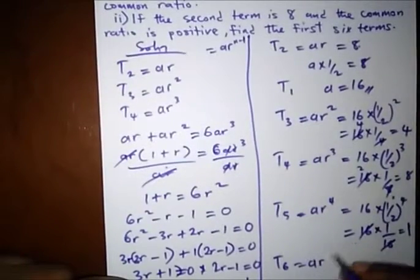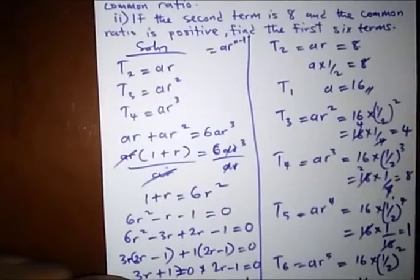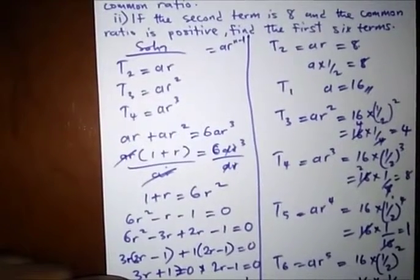is AR raised to the power 5, which will give us 16 times 1 over 2 to the power 5, which is 16 times 1 over 32. 16 will go here 1, 16 will go here 2 times, and we have half.